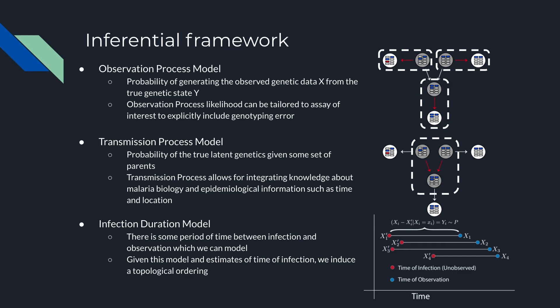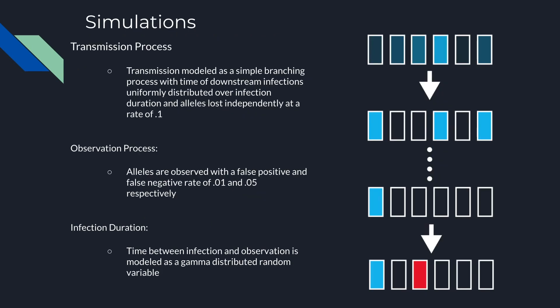The second, the transmission model, provides a probability of a particular true genetic state given some set of parent nodes, allowing for the direct integration of knowledge about malaria biology and epidemiological information. The third, the infection duration model, controls the distribution of time of infection given the time of observation, which then induces a temporal and therefore topological ordering.